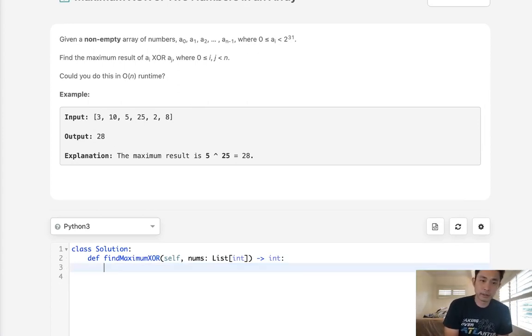Well there's really not very intuitive ways to do this using a hash because no matter what with XOR we have to check every single other number to see what the maximum XOR could possibly be.